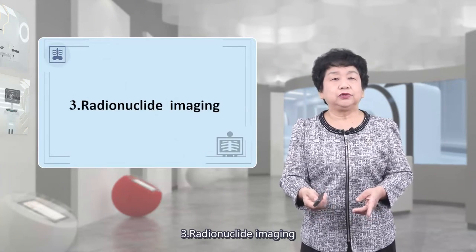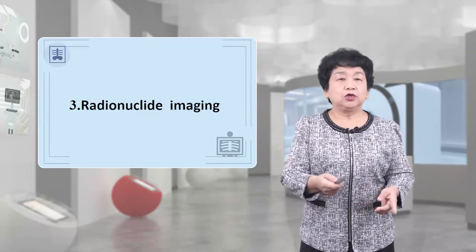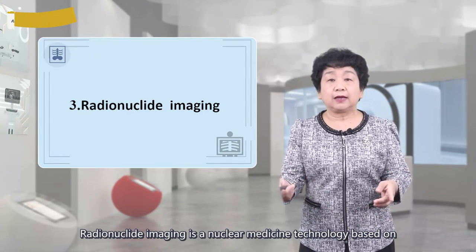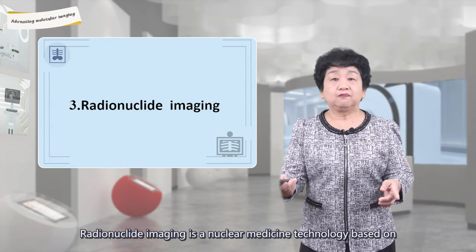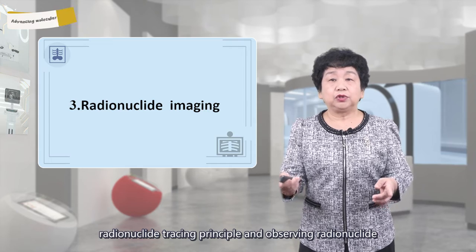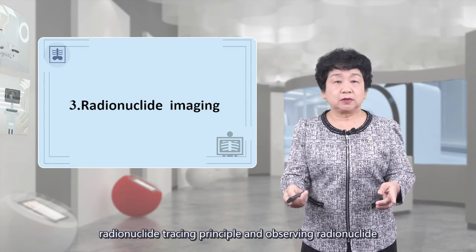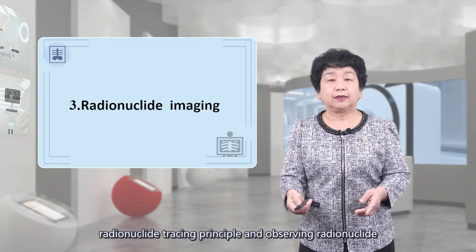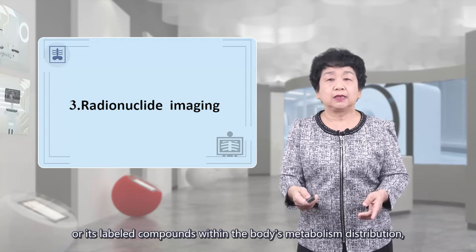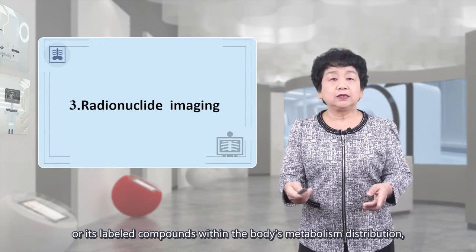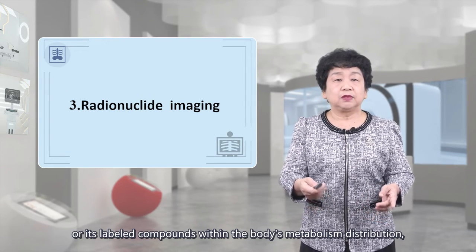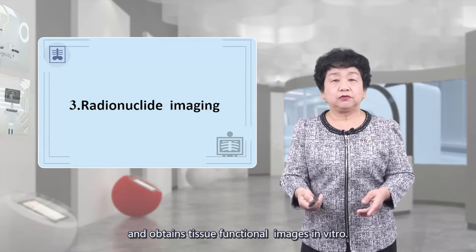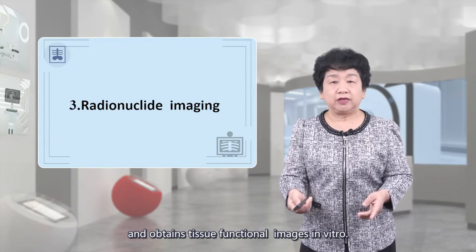The third topic: radionuclide imaging. Radionuclide imaging is a nuclear medicine technology based on the radionuclide tracing principle, observing radionuclide or its labelled compounds within the body's metabolism and distribution, and obtaining tissue functional images in vitro.